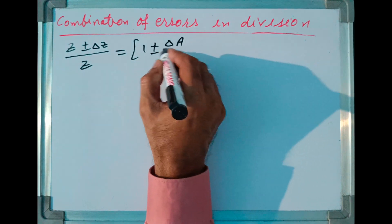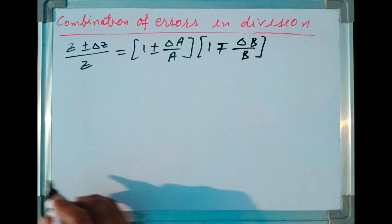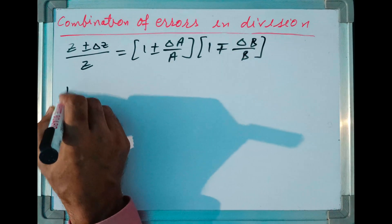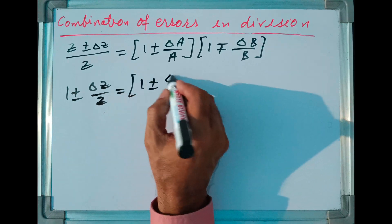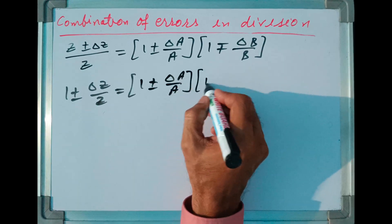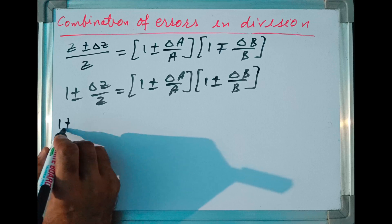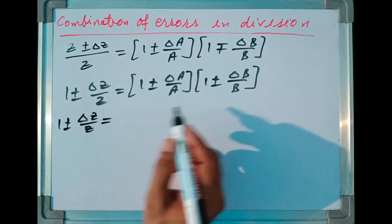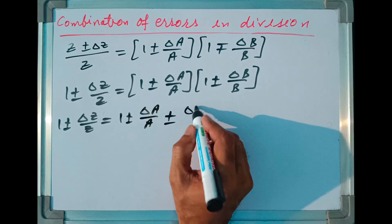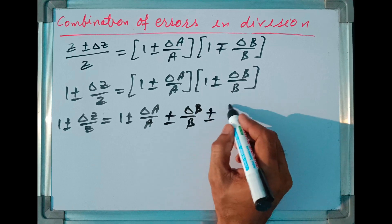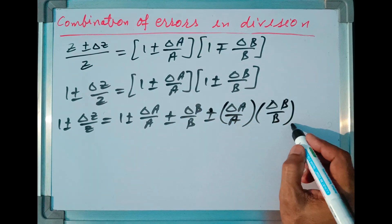The previous equation can be written as Z plus or minus Delta Z divided by Z is equal to 1 plus or minus Delta A upon A, multiplied by 1 plus or minus Delta B upon B. Expanding the right-hand side, it becomes 1 plus or minus Delta A upon A, plus or minus Delta B upon B, plus or minus Delta A upon A multiplied by Delta B upon B. Let me call it equation number seven.